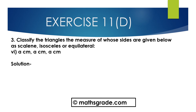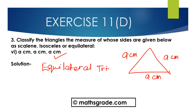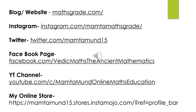Question 6: the sides are a centimeter, a centimeter, and a centimeter. In this triangle, all three sides are equal — each equal to a centimeter. We know any triangle whose all three sides are equal is called an Equilateral triangle. So this is an Equilateral triangle. All three sides are equal.